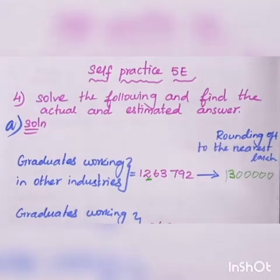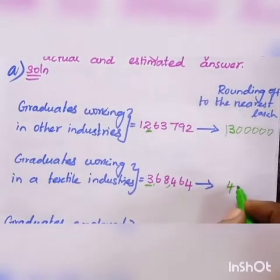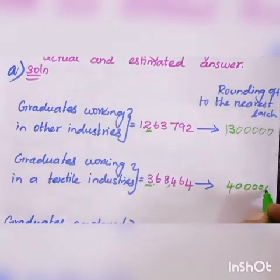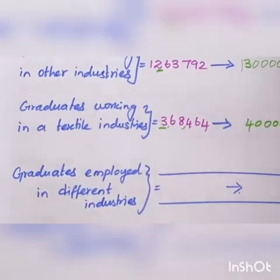So 3 plus 1 equals 4. We have five digits after, so you have to put five zeros: 1, 2, 3, 4, 5. After that, we have to make our addition.